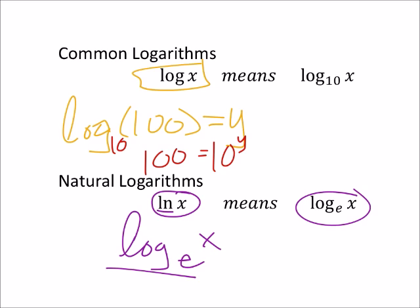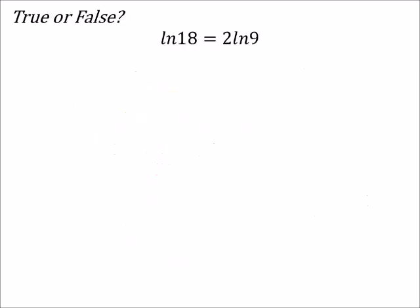Alright, so true or false: the natural log of 18 is two times the natural log of 9? So I'm just going to plug these directly into my calculator. So I'm going to find the natural log of 18, which for me my calculator gave me 2.89 and then some change.